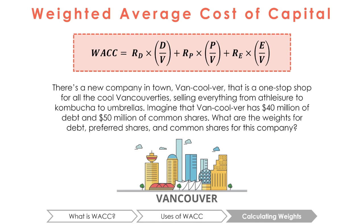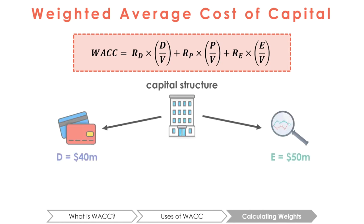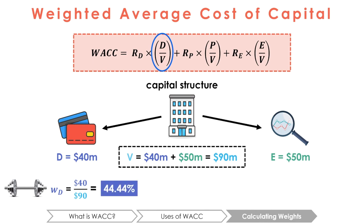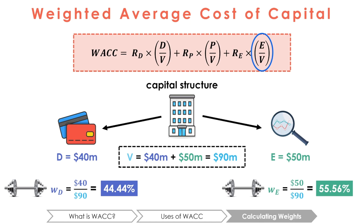Let's try to solve a practice example. The first step is always to calculate the value of total assets. The total assets must equal the sum of its financing: 40 plus 50, which equals $90 million. Next, we divide each individual component by the total assets. The weight of debt is 40 over 90, which is 44.44%, and the weight of equity is 50 over 90, which is 55.56%. You can check your work by adding up the percentages — because they are weights, they should add up to 100%.